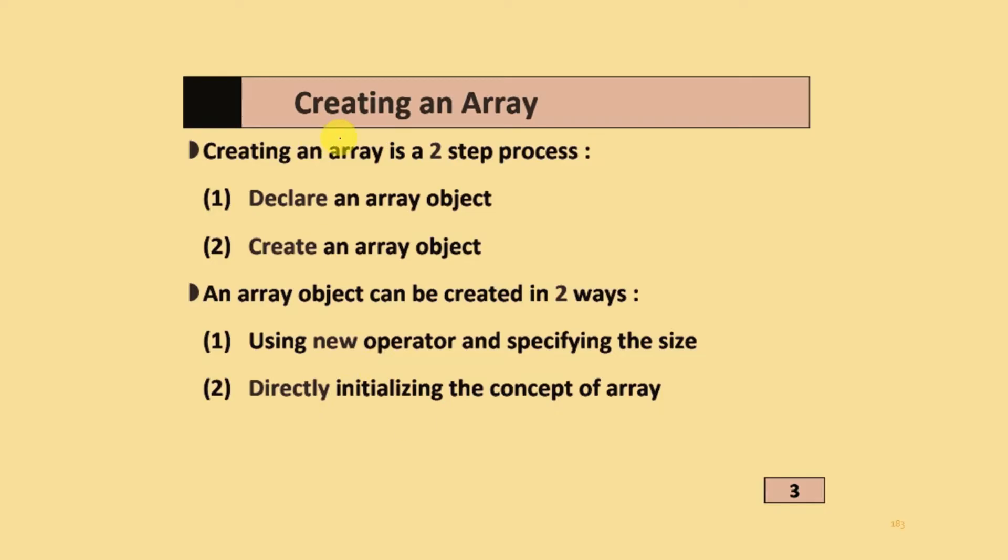When creating the array, it is a two-step process. First, you have to declare an array object, and second, create an array object. Array objects can be created in two ways: by using new operator and specifying the size of that array, or directly initialize the array.